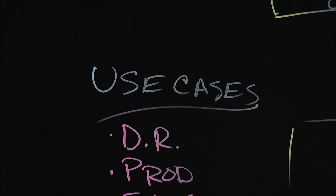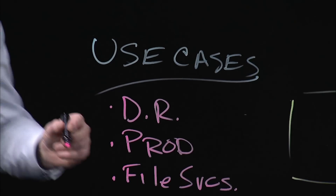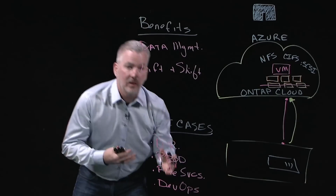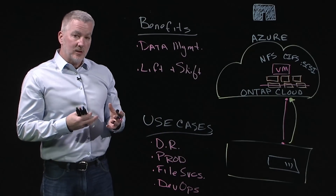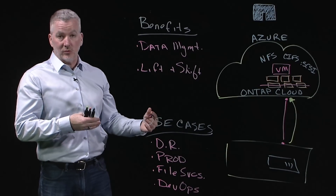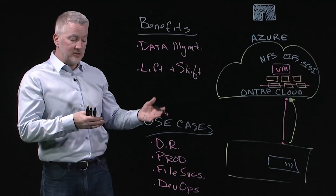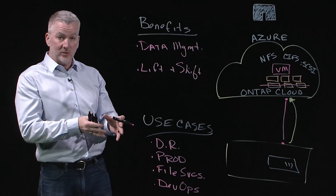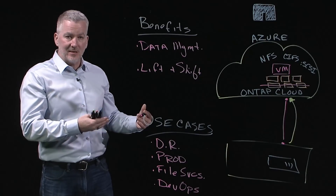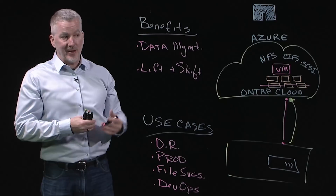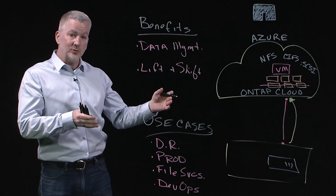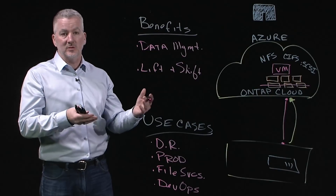Another major use case enabled by storage efficiencies is DevOps. With FlexClone technology, it's possible to make multiple clones of a dataset without consuming any additional storage resources. Any changes go into those extra containers without impacting the source. This enables developers to get up and started immediately. Natively in the public cloud, you need to carve out additional storage resources and copy the data, which means your developers are waiting.